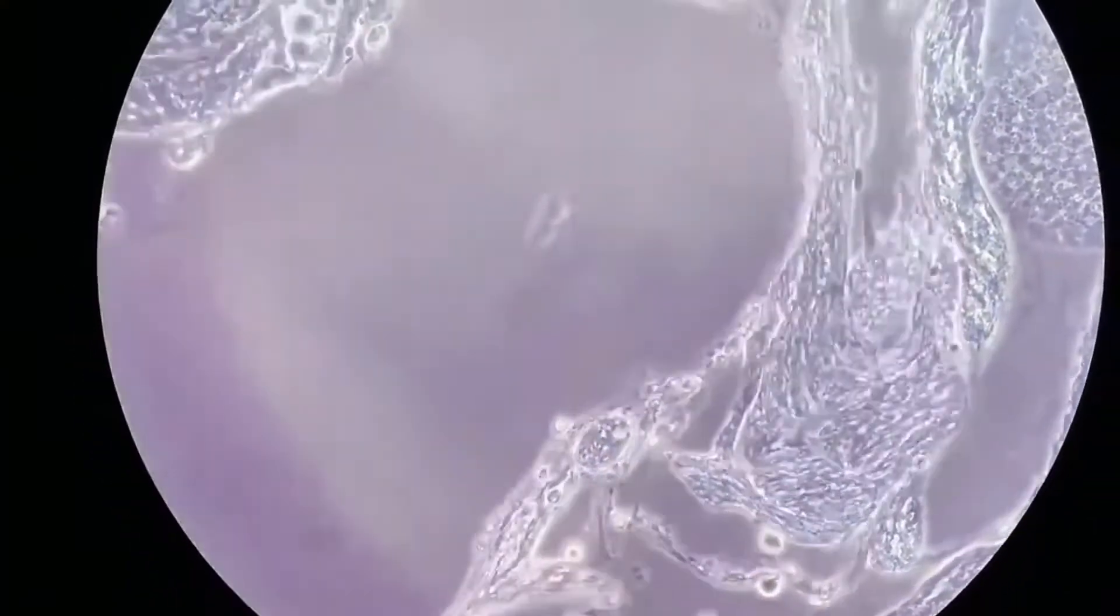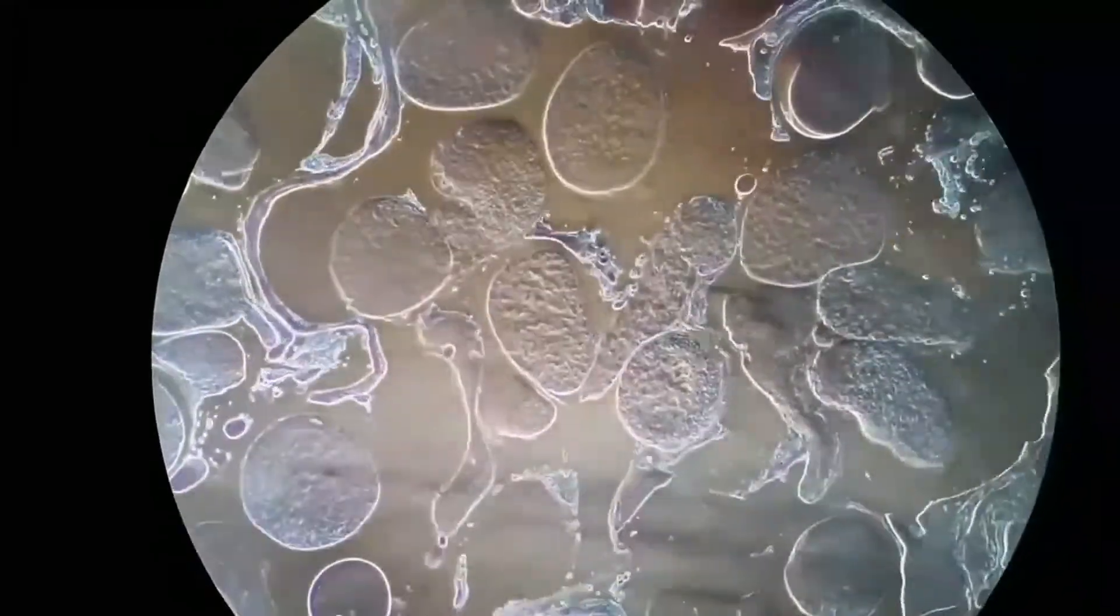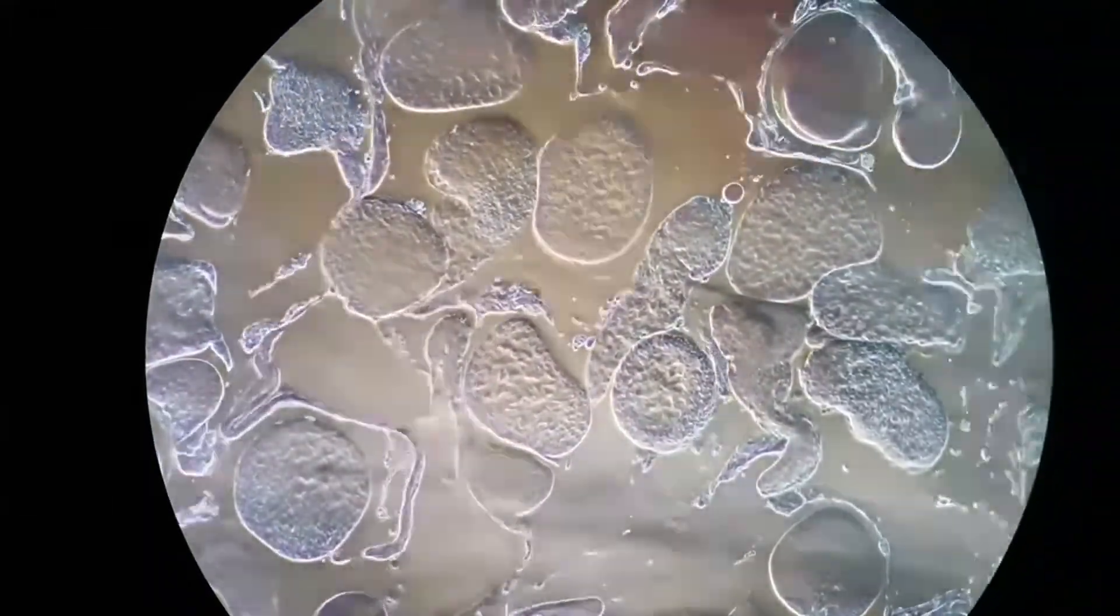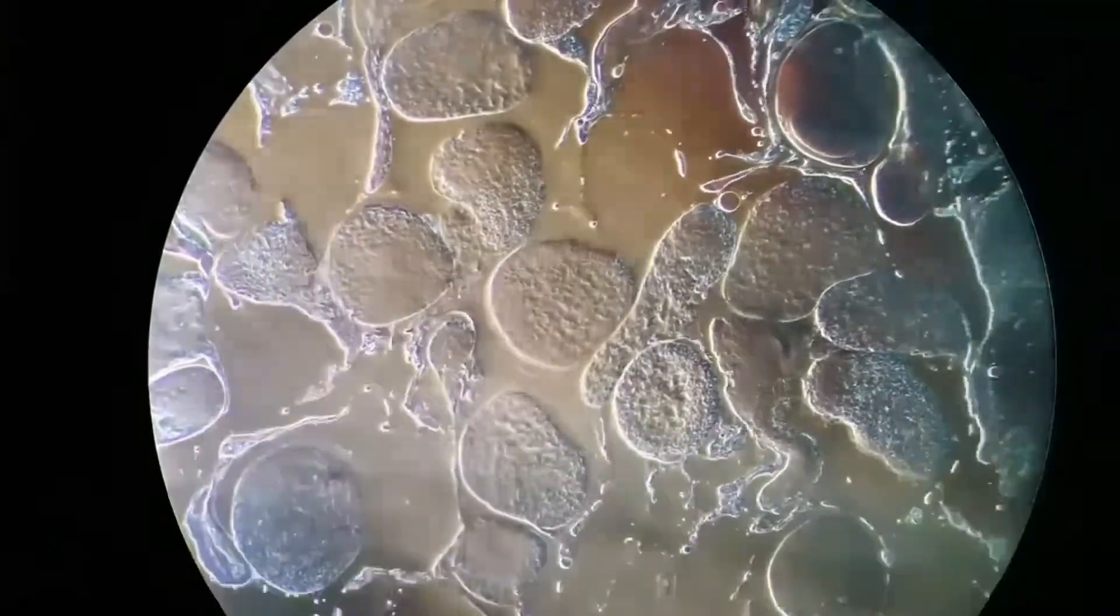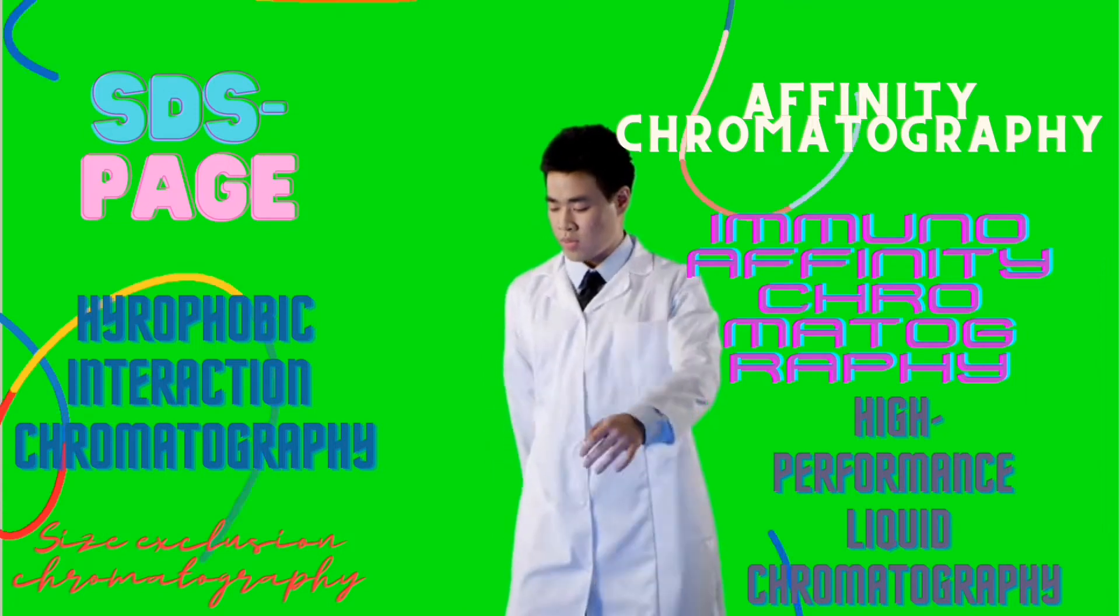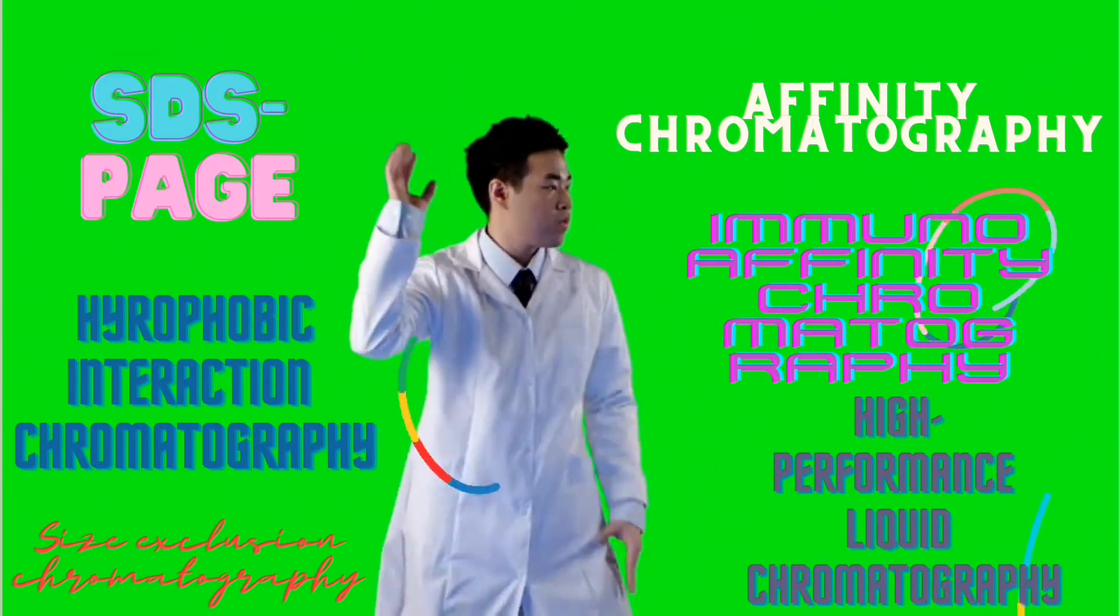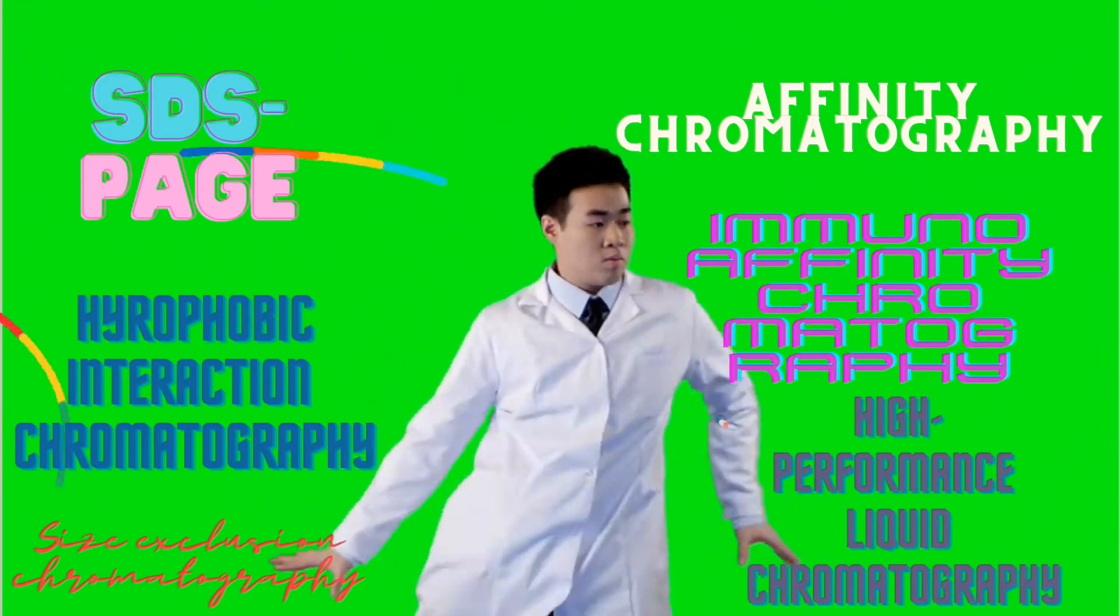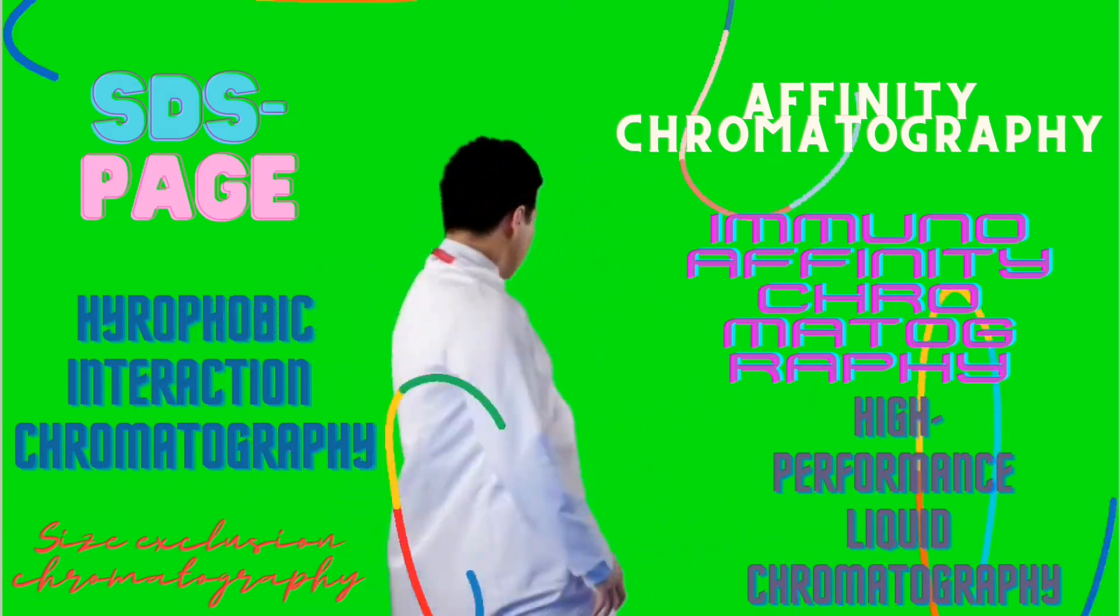Scientists first lyse the cells chemically through detergent application or physically through heating or sonification. Precipitation and centrifugation may then follow, after which a variety of techniques that segregate the target protein from other molecules based on its properties can be performed.